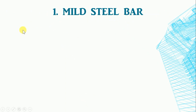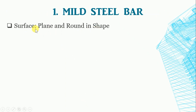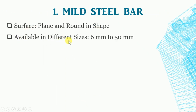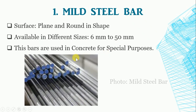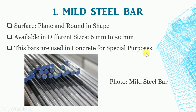Mild Steel Bar: The surface of mild steel bar is plain and round in shape. They are available in various sizes, 6 mm to 50 mm. They are used in concrete for special purposes, such as dowels at expansion joints where the bars must slide in a metal or paper sleeve, for contraction joints in roads and runways, and for column spirals. They are easy to cut and bend without damage. For bridges and other heavy structures, mild steel is not recommended due to no grade bonding between the concrete and steel.